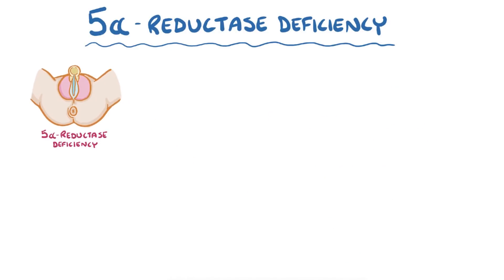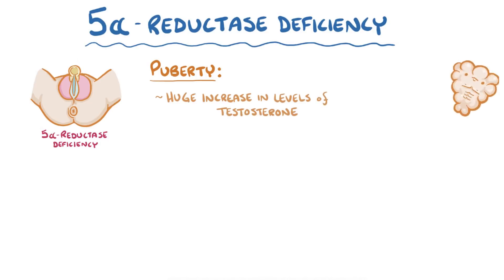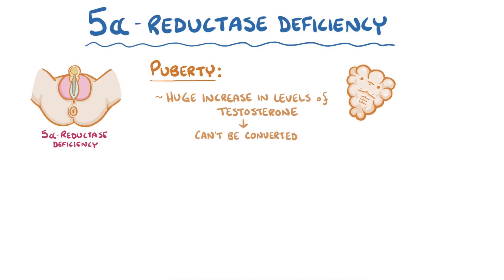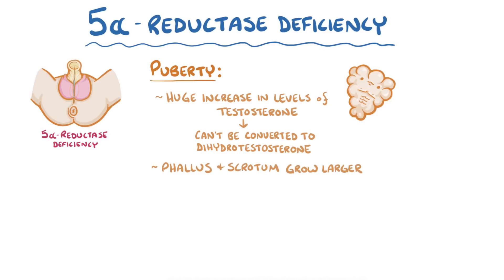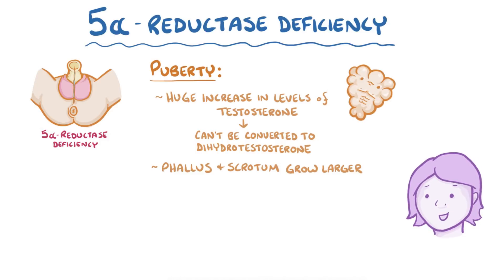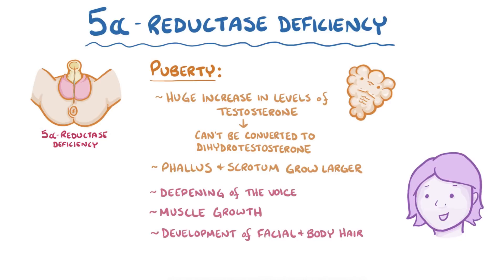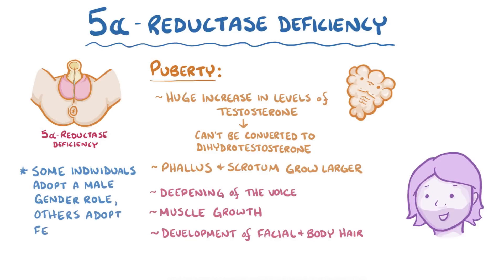When these individuals reach puberty, there's a huge increase in the levels of testosterone. Even though it can't be converted to dihydrotestosterone, there's so much testosterone around that the phallus and scrotum grow larger and start having more of a male appearance. In addition, the high levels of testosterone will usually lead to a deepening of the voice, muscle growth, and development of facial and body hair. Some individuals with 5-alpha-reductase deficiency adopt a male gender role, while others adopt a female gender role.